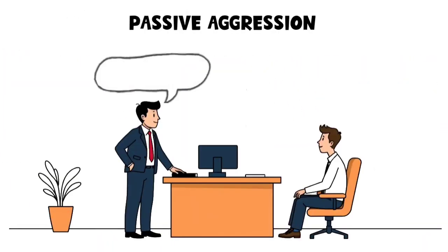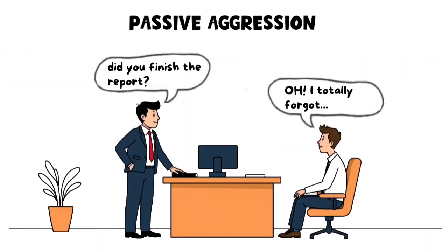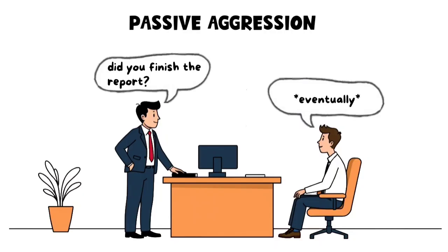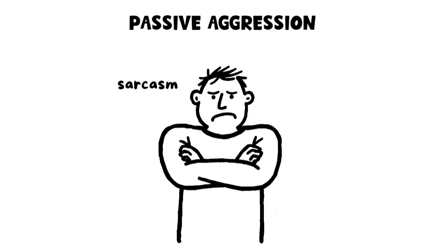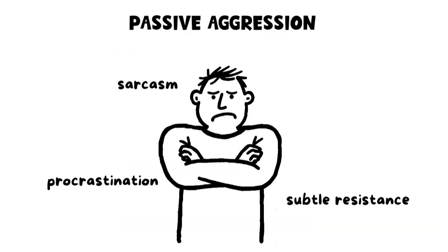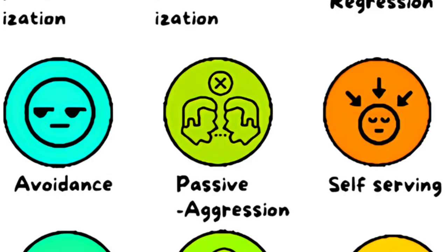Passive aggression. Passive aggression occurs when a person expresses their anger or frustration indirectly rather than addressing the issue openly. This could include sarcasm, procrastination, or subtle resistance.